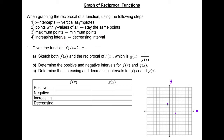Now let's work on example 1 to see how we can graph the reciprocal of a linear function y equals 2 minus x. We know the y-intercept is at 2, so first let's put the y-intercept on the graph. Next, let's define our slope. The slope is the coefficient in front of the x-term, which is negative 1.